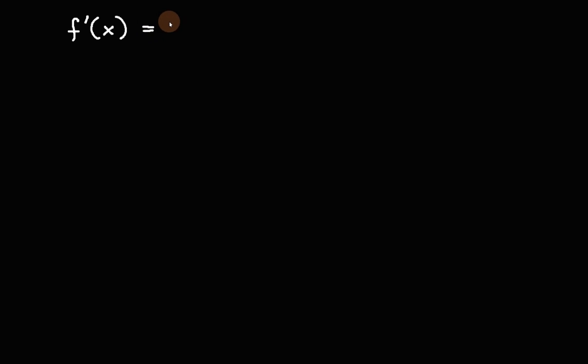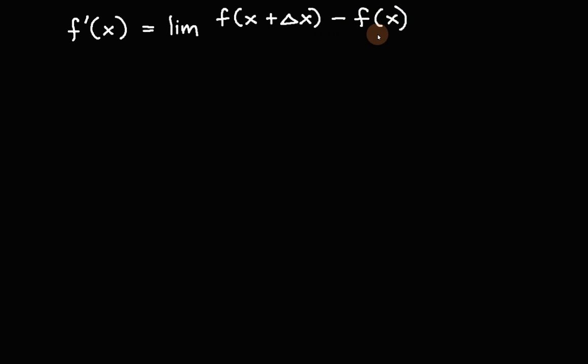In this video, we're going to solve problems on how to find the derivative of a function using the limit definition. Recall that the limit definition of the derivative is f prime of x equals the limit of f of x plus delta x minus f of x divided by delta x, as delta x approaches 0.